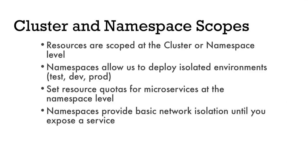Things are scoped at the cluster and namespace level. Things scoped at the cluster level propagate down to namespaces, hitting through the API server. There are also non-namespaced resources. Namespaces allow us to split out environments, giving some isolation in terms of where secrets can propagate and how far RBAC privileges go. But once we start exposing services, we have network access across namespaces, so that's not really a hard boundary. We want to set resource quotas for namespaces and at the pod level to make sure one misbehaving container can't consume unlimited resources and bring down control plane components.